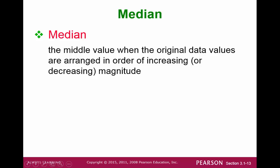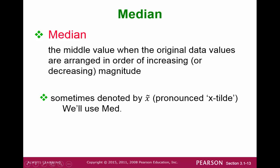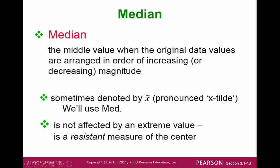Another measure of center is the median. The median is the middle value when the data points are sorted in order. Some textbooks use the notation X tilde for this, but we won't. We'll just call it med, M-E-D, or simply use the whole word, median. The other important property is that, unlike the mean, the median is not affected by extremely large or extremely small values. We call this a resistant measure of center.